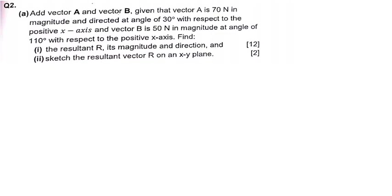The first thing we have to do is come up with a free body diagram of the vectors, and we have to put them on an xy plane. So I'm going to have my xy plane here. The first vector A — let us look at the angle, which is 30 degrees. We have to check: is 30 degrees in the first, second, third, or fourth quadrant? It is in the first quadrant, so I'm going to put it in the first quadrant.